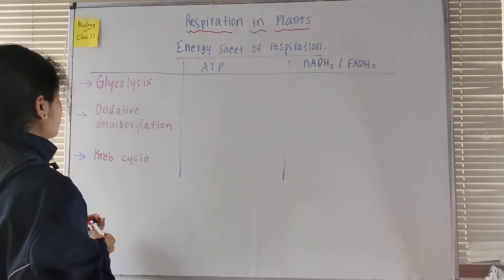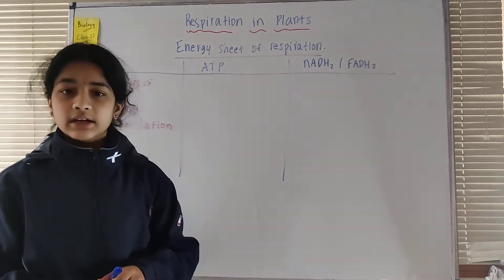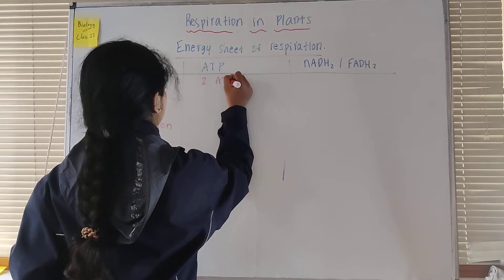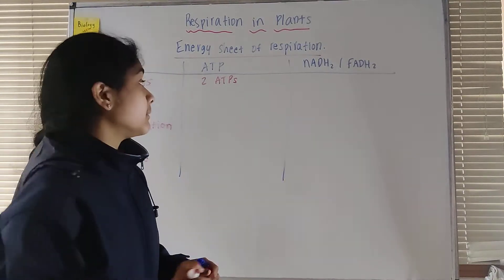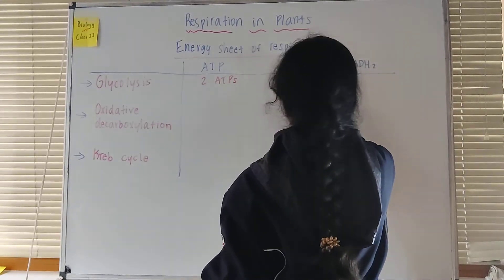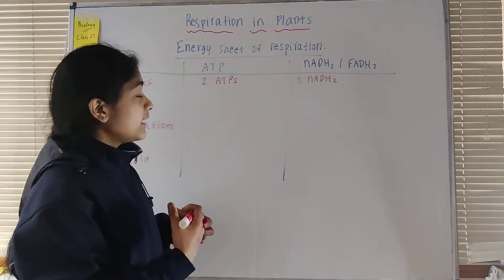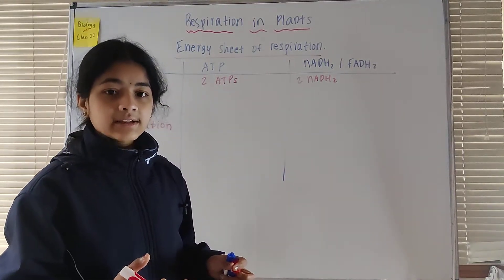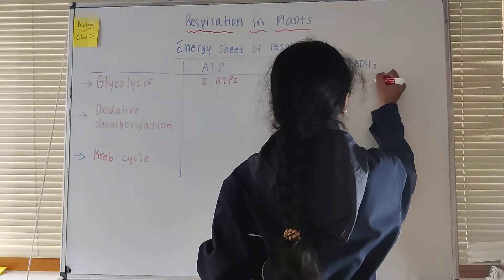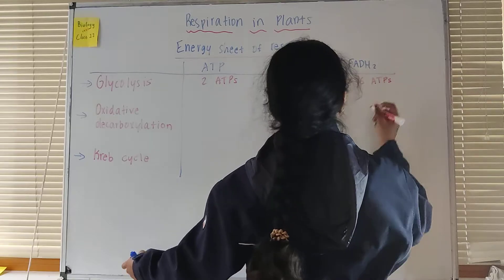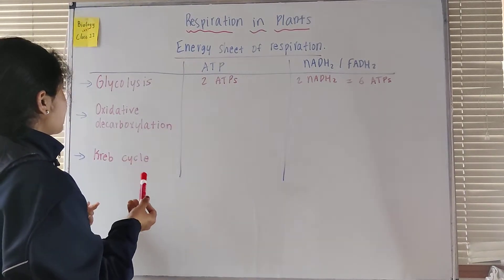In glycolysis, two ETPs are directly formed. For NADH2 or FADH2, there are two NADH2 formed and no FADH2. Since each NADH2 is worth three ATPs, two times three gives six ATPs. So six plus two gives a total of eight ATPs formed in the process of glycolysis.